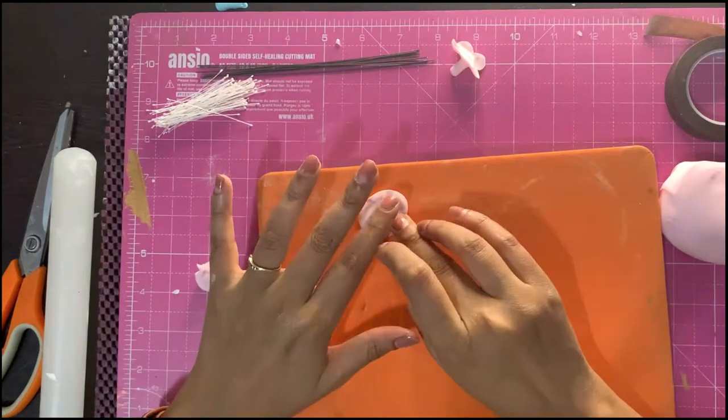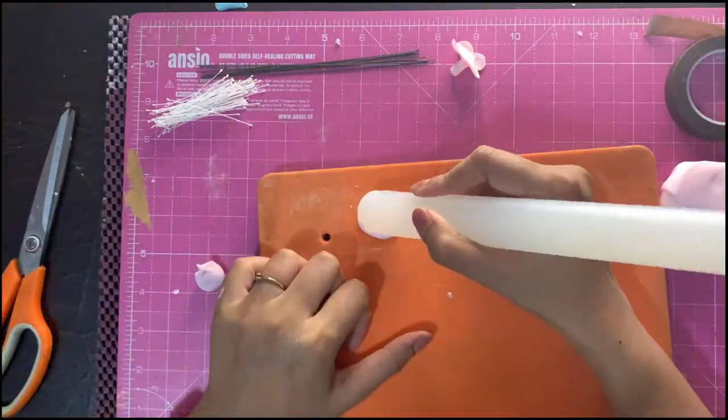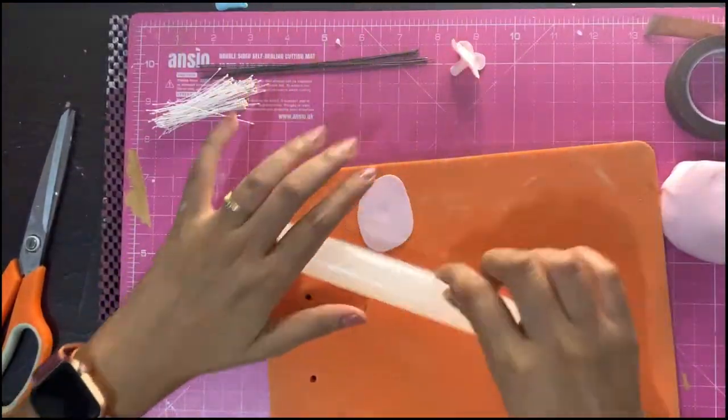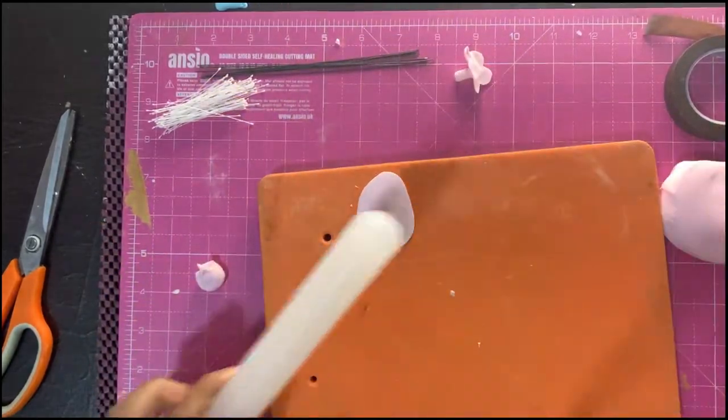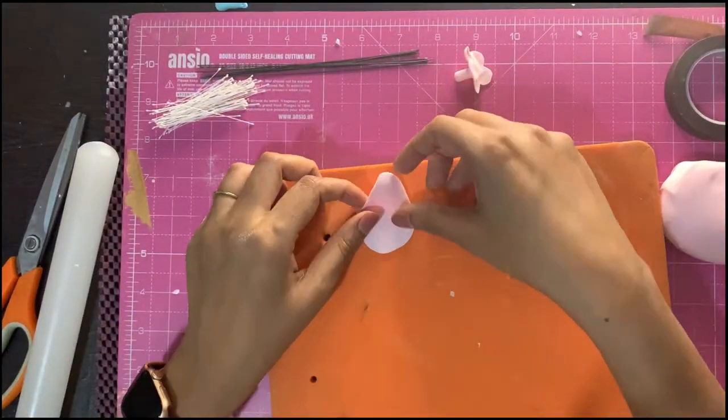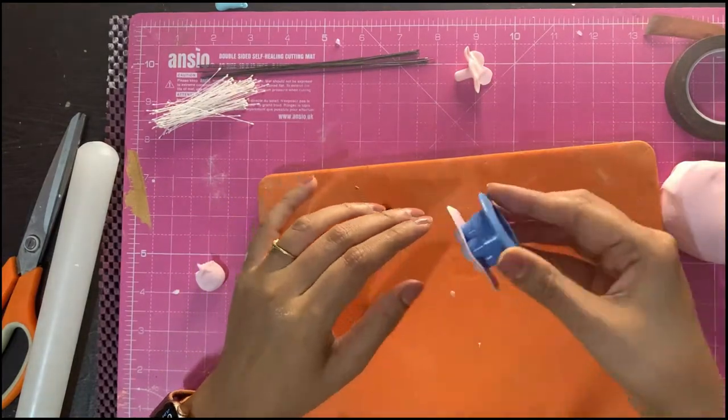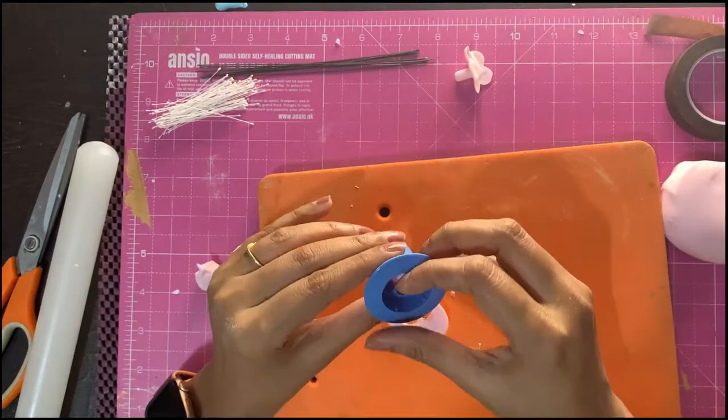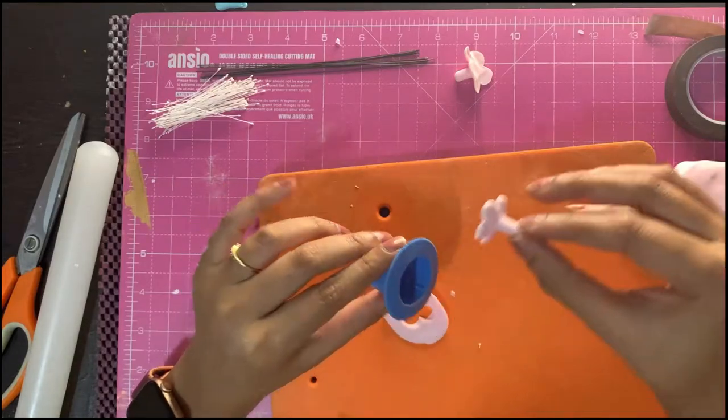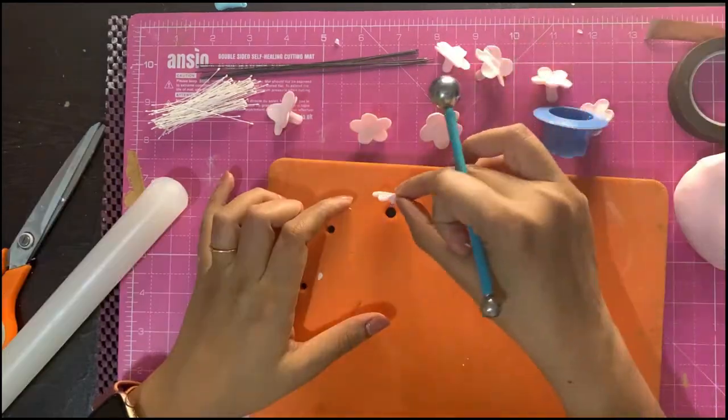Now I will make one more flower so you understand better. Put a small piece of fondant on the hole, then roll it out. Put it upside down on the mat and cut it with a flower cutter. This will give you a tapering end.